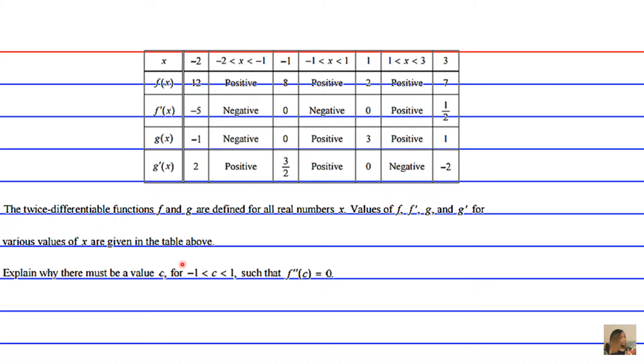Explain why there must be a value c, where c falls between negative 1 and 1, such that f double prime of c is equivalent to 0.